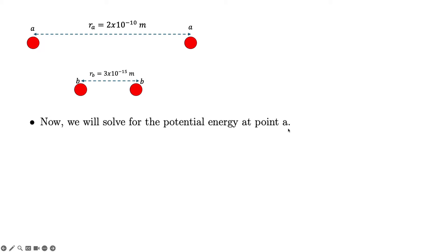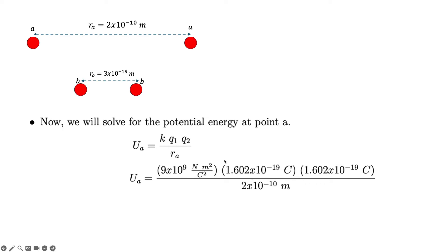We solve for the potential energy at A using the equation U = kQ₁Q₂/r. Note that R appears as a linear term, not squared — if it were R squared, you would be dealing with the electric field. Our Q₁ and Q₂ are each 1.602×10⁻¹⁹ coulombs, since these are protons carrying the base unit of charge. Since both protons are positive, you get U_A = 1.1549×10⁻¹⁸ joules.